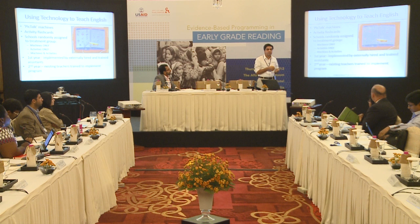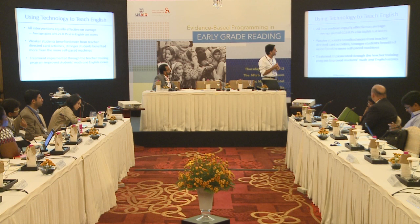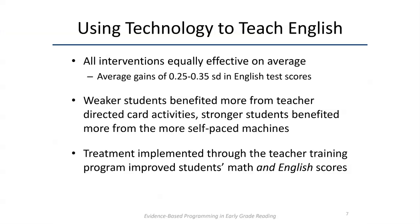The broad takeaway was that across all cells of the two-by-two grid, test scores improved no matter which treatment you looked at — going up by about 0.2 to 0.35 standard deviations. In general, this seemed like an effective way of improving learning outcomes. The interesting finding was that the strongest students benefited more from the self-directed machines, whereas weaker students benefited more from the teacher-directed flashcard activities.